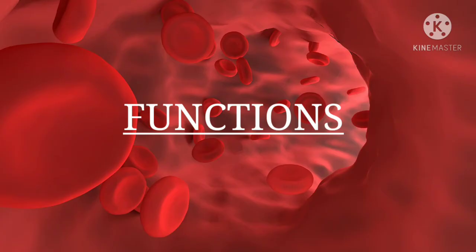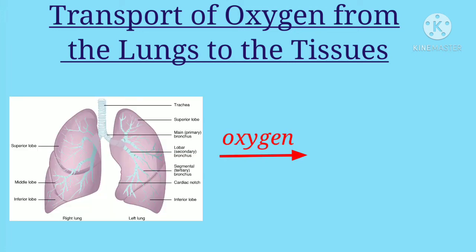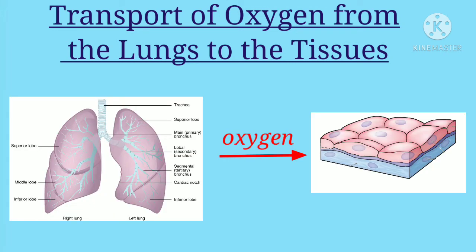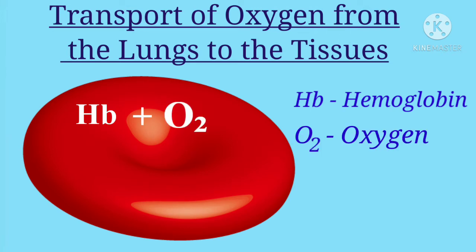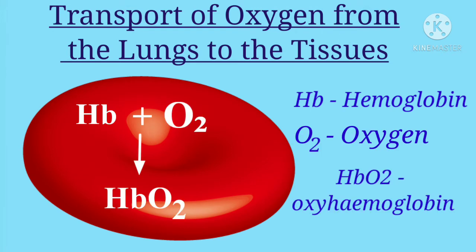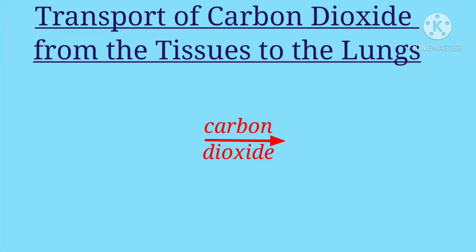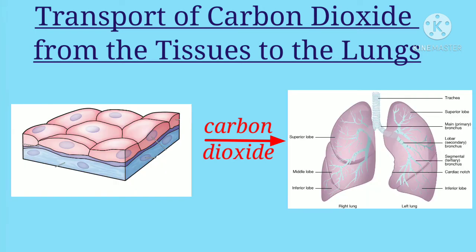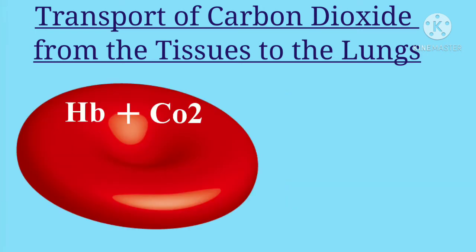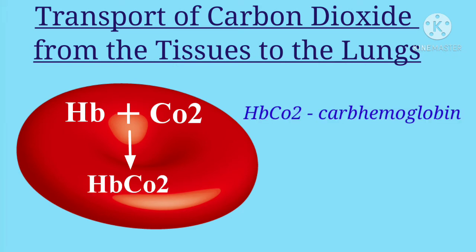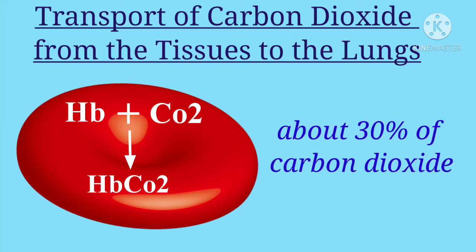Let's see about the functions of erythrocytes. First, it transports the oxygen from the lungs to the tissue. Hemoglobin in RBC combines with oxygen to form oxyhemoglobin. About 97% of oxygen is transported in blood in the form of oxyhemoglobin. Second is transportation of carbon dioxide from the tissue to the lungs. Hemoglobin combines with carbon dioxide and forms carbhemoglobin.